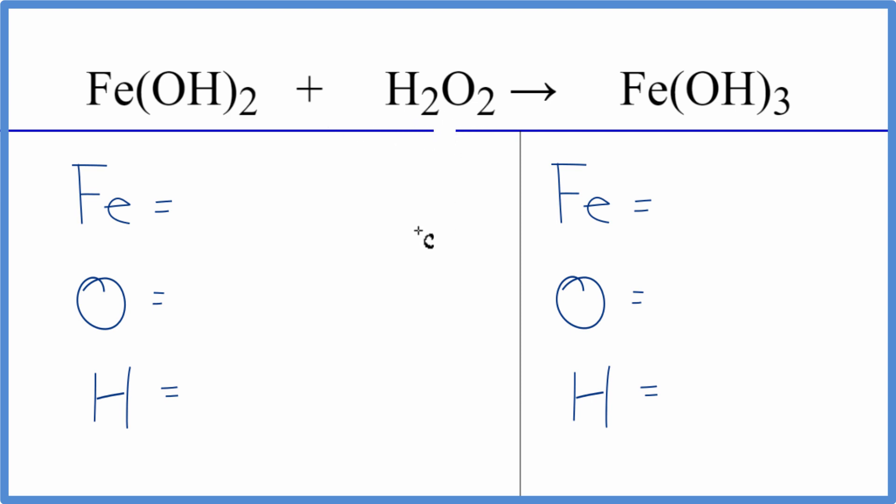Let's count the atoms on each side of the equation and then balance it. We have one iron atom, and then this 2 applies to everything in the parentheses. So we have 2 times the 1, 2 oxygen atoms, and 2 times the 1 hydrogen, 2 hydrogen atoms.